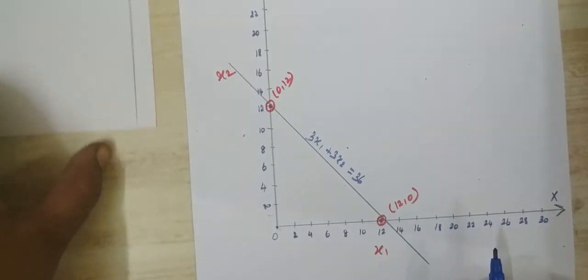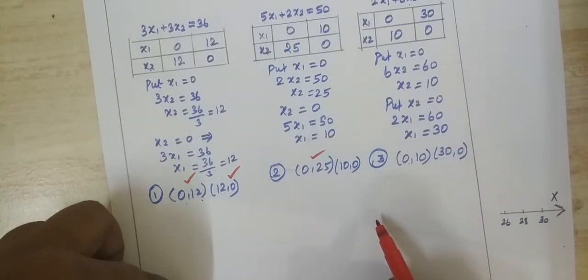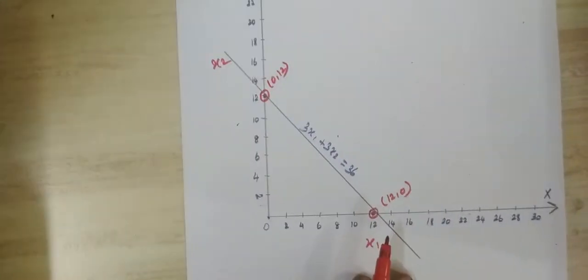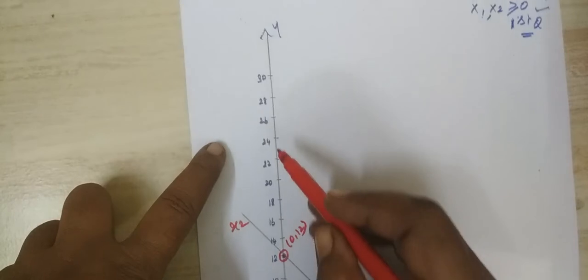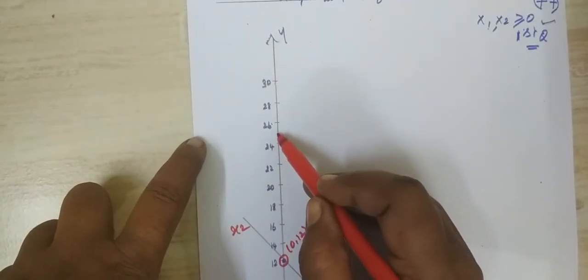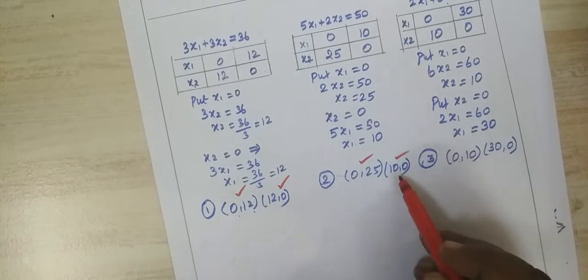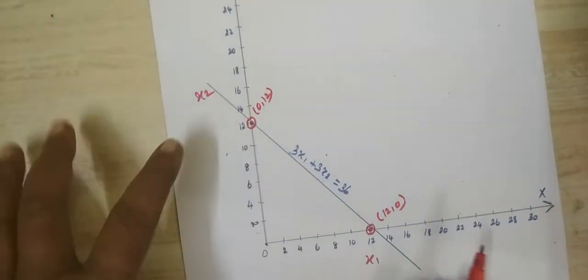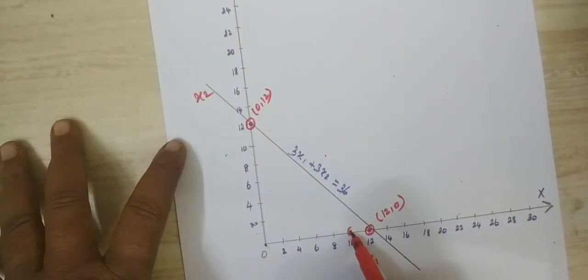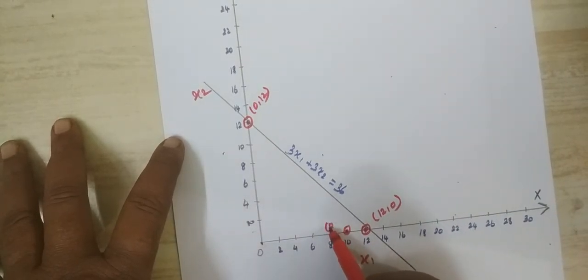For equation 2, the points are (0, 25) and (10, 0). For (0, 25): x equal to 0, y equal to 25, which is confirmed. For the next point (10, 0): x1 equal to 10, x2 equal to 0. We mark this as (10, 0) on the graph.